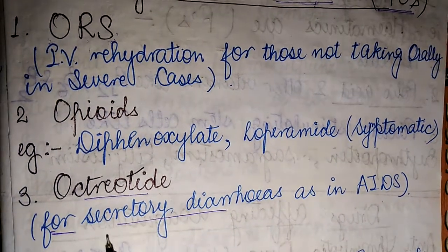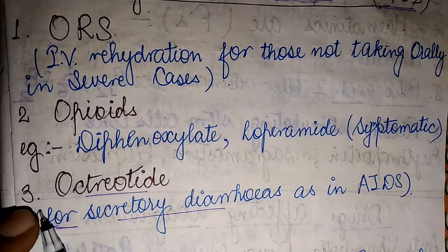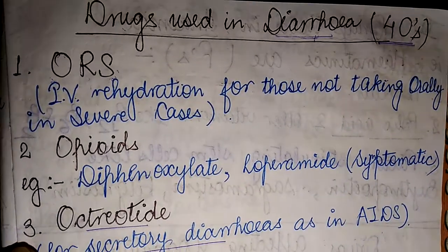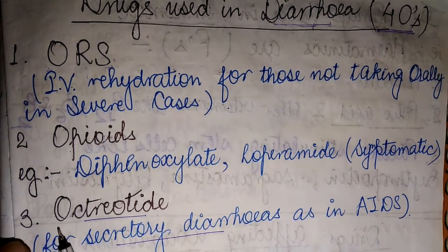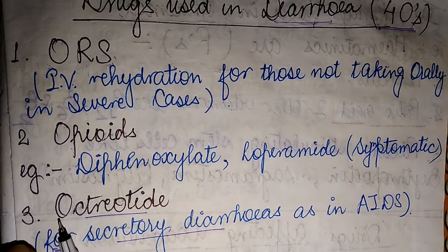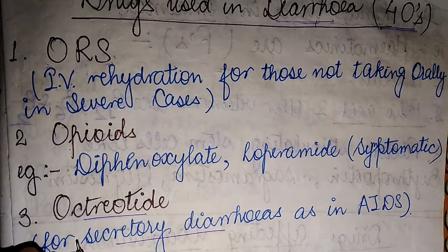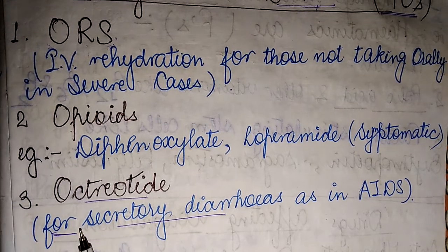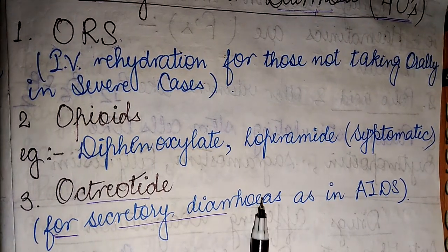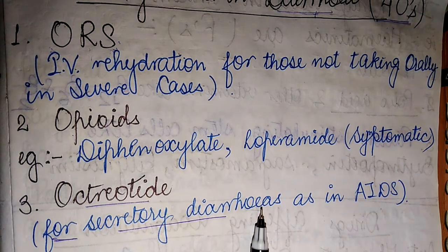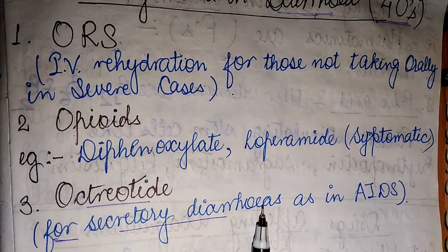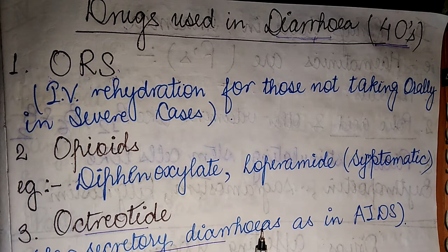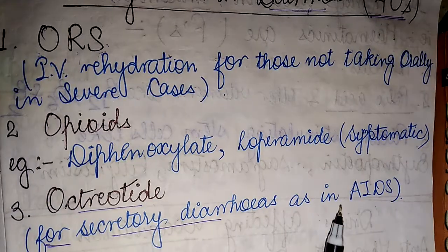The third O stands for octreotide. Octreotide drugs are basically used in cases of secretory diarrhea. Secretory diarrheas are most commonly found in immunocompromised patients, such as patients with AIDS.